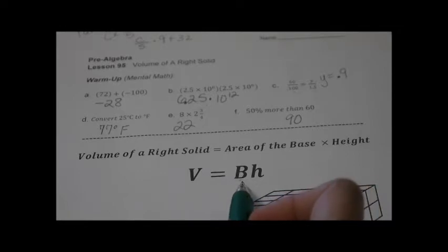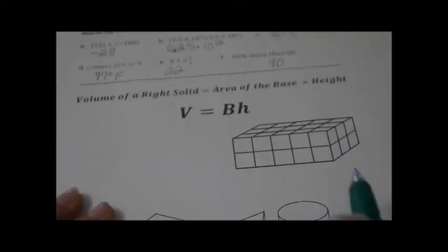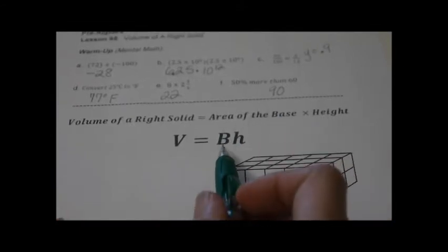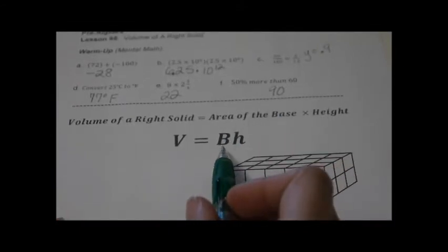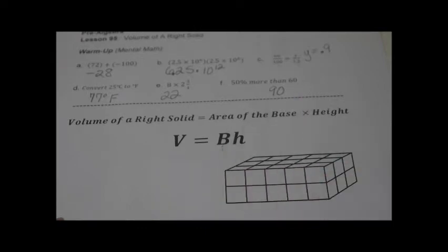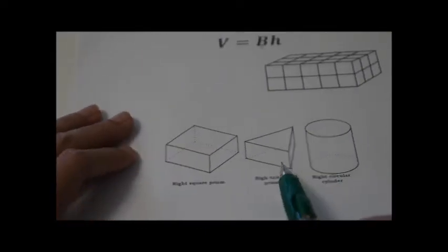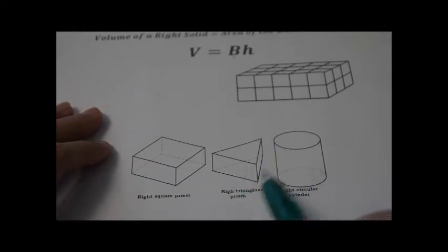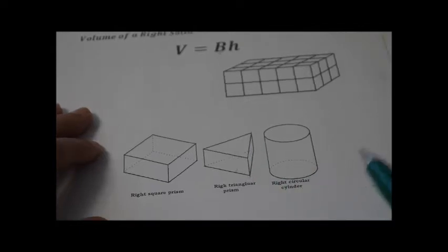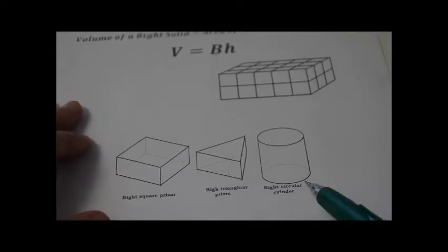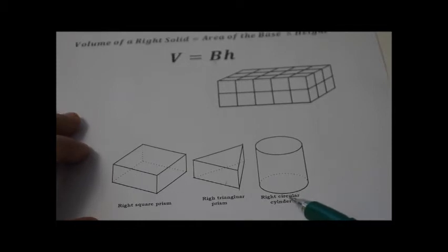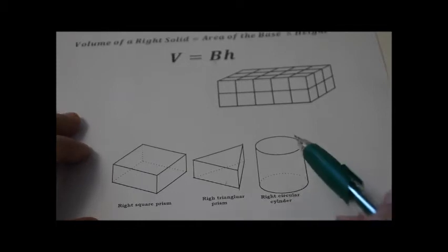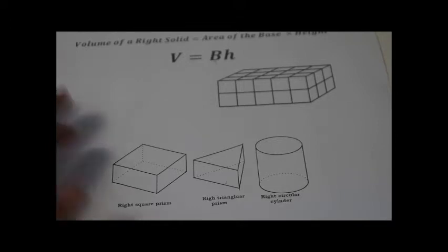If you have a rectangular solid where the base is a rectangle, then it would be length times width times height. If the base was a triangle, then you would do one-half base times height, times the height again — so you've got two different heights. If you have a cylinder, your area of the base would be pi r squared times the height of your figure.